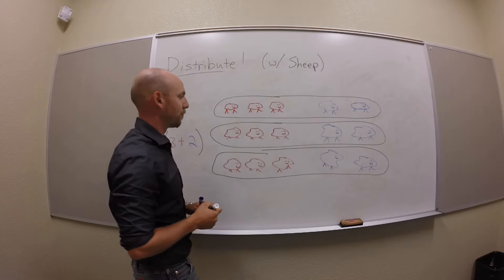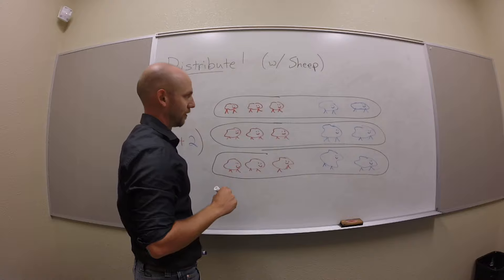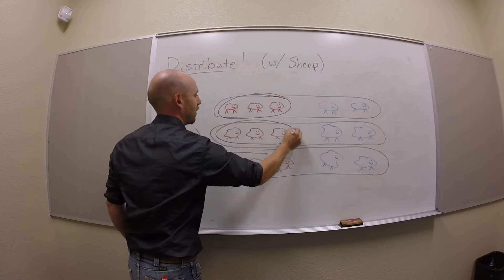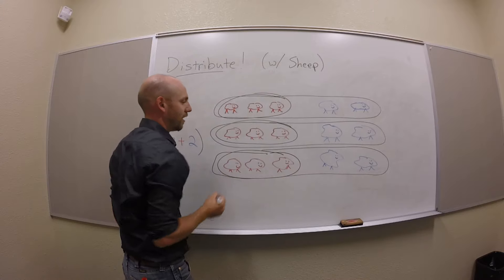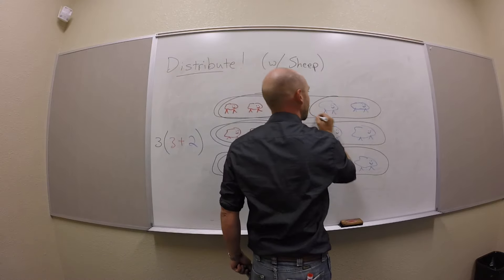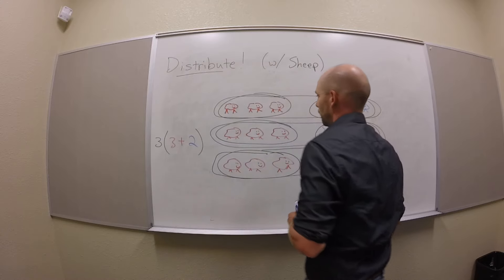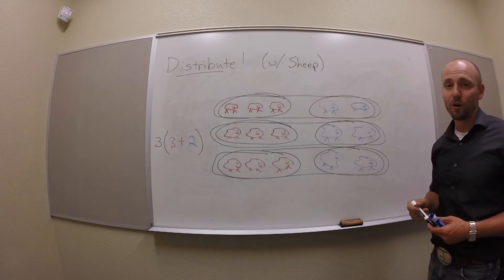But if I split the other way, right, that would be grouping red sheep this way and blue sheep this way. You guys see what I've done? I made subgroups, right?